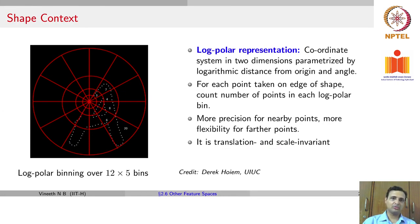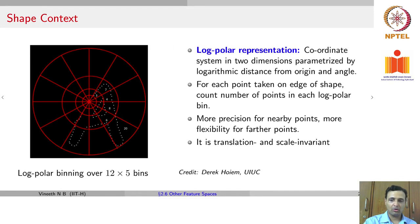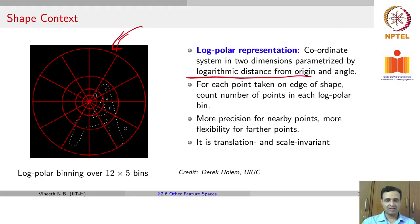One of the other important feature representations that was developed is known as shape context. Shape context was about taking a pixel and getting a log-polar representation of the neighborhood around the pixel. You define a coordinate system in two dimensions parameterized by logarithmic distance from the origin — which is the pixel at which you are trying to get the representation — as well as the angle. For each point you consider, you count the number of points in each log-polar bin around that particular pixel.